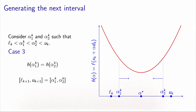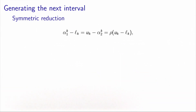In practice, the case where the two function values are exactly equal happens so rarely that we will not exploit this property in the algorithm. So that is the main principle: at each iteration, we make two measurements inside the interval, and based on the value of the function at these two places, we can decrease the size of the interval either on the left or on the right. The first principle we will apply is to reduce the interval symmetrically: the distance between alpha 1 and the lower bound equals the distance between alpha 2 and the upper bound, reducing the interval by a factor rho.